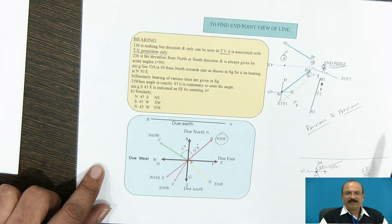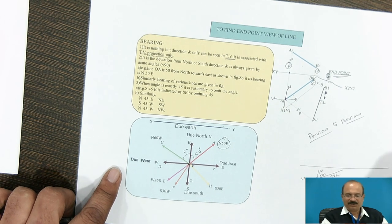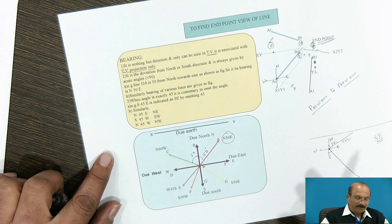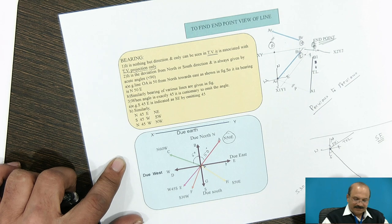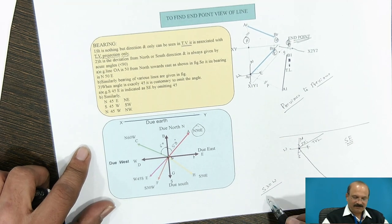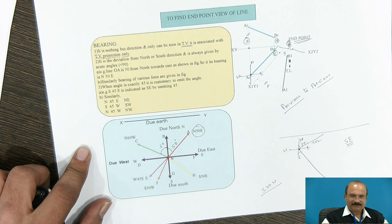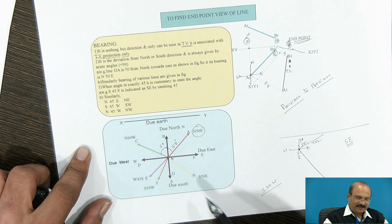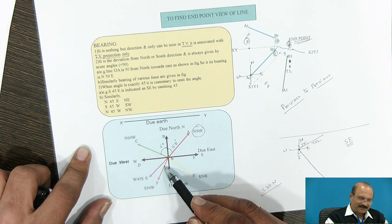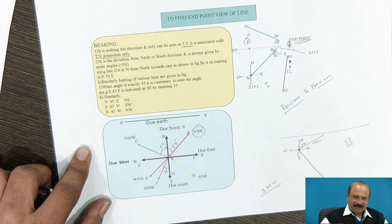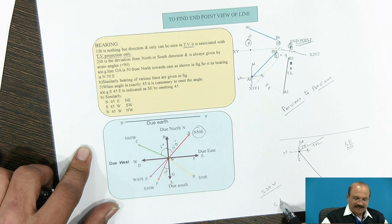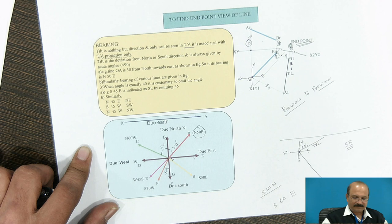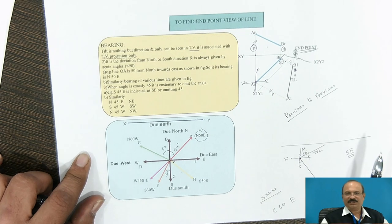Bearing is taken only in the top view, not in the front view. For example, if given South 30° West, it comes as South towards West at 30 degrees. And South 60° East means South 60 degrees towards East. Like this, you are expected to measure all the angles for bearing representation.